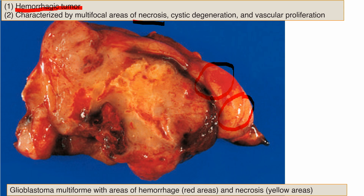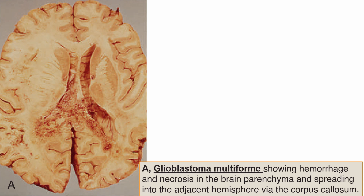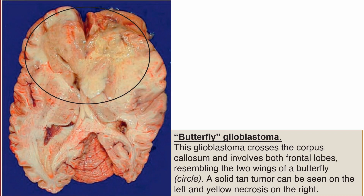Glioblastoma multiforme shows sites of hemorrhage and the tumor can expand along the corpus callosum in a butterfly wings pattern — hence called butterfly glioma. The tumor is found in cerebral hemispheres and crosses along the corpus callosum. Midline crossing is highly suggestive of butterfly glioma, involving the frontal lobes as the two wings of the butterfly.